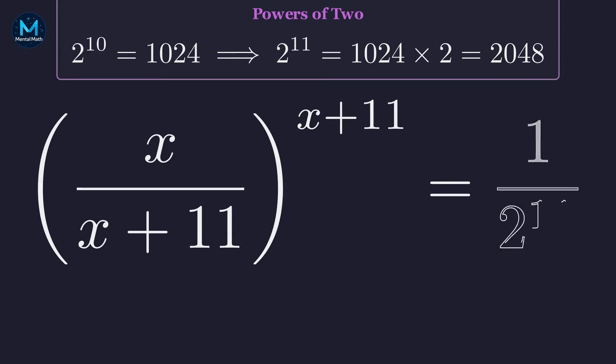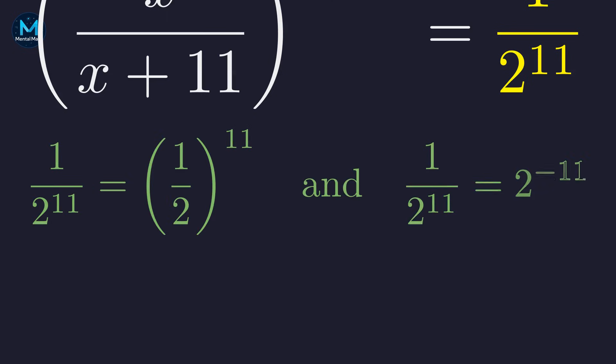So we can rewrite this as 1 over 2 to the 11th. Now, here's the clever part. We can write this fraction in two different ways, and both will be useful. First form: 1 half to the 11th. Second form: 2 to the negative 11. Let's try both and see which works.